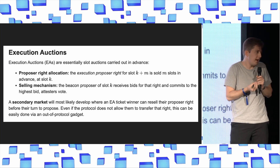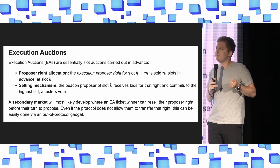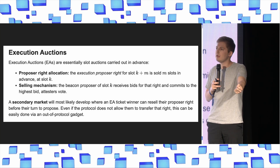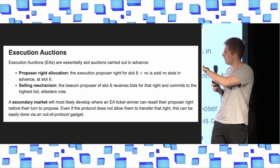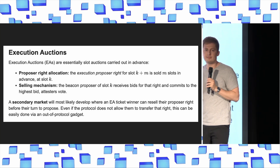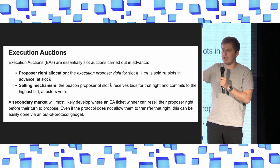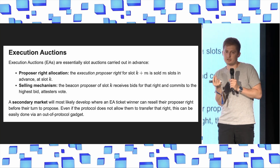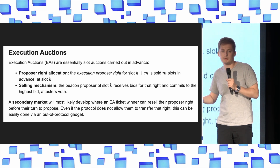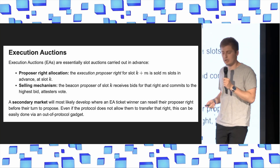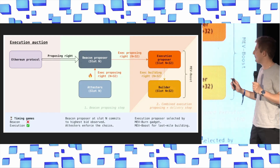From a game theory perspective, how much are you willing to bid for that right? Well, up to the expected MEV you can extract in that slot. Which means in this mechanism you're basically selling expected future MEV. This asset you get is a function of future MEV — you're selling away MEV in expectation, which means you're burning MEV in expectation. Which is very cool.